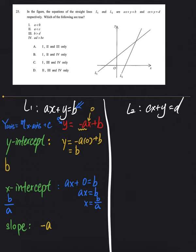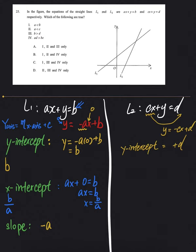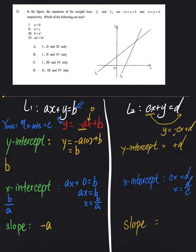Slope mil chuki hai. Hum line two ka bhi aise solve karte hain. Y ko subject banate hain: y equals to negative cx plus d. So y-intercept of line two will be d. X-intercept: y ko zero banate hain, so cx equals to d, x equals to d over c. And slope will be anything jo bhi x ke saath hai, so negative c.